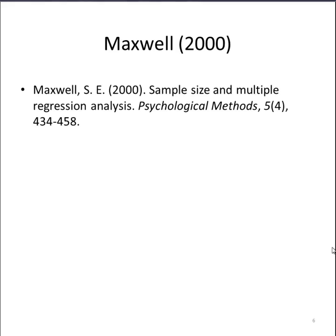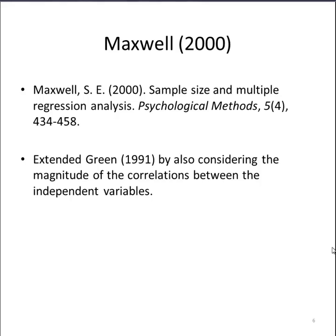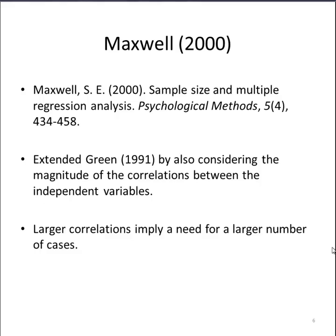Now Maxwell took Green even further. In Maxwell's study, he extended it in such a way that he took into consideration the magnitude of the correlations between the independent variables. He also took into consideration the purposes you would conduct a multiple regression, just like Green, and statistical power, just like Green. But he added the extra bit of what are the correlations between the independent variables? Because the larger those correlations are, the larger the sample size you are going to need.